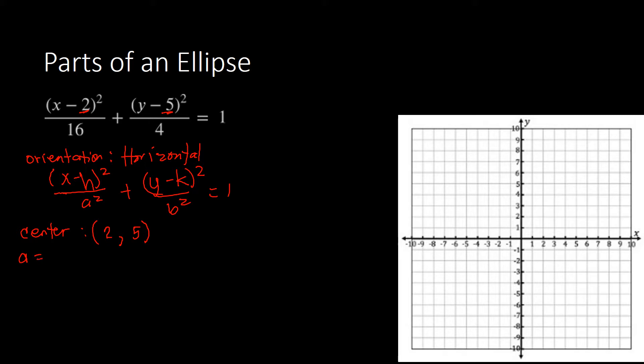Our a is: since we've got a squared equal to 16, getting the square root of 16, that is 4. So our a is 4. Our b is on (y minus 5): b squared is 4, so getting the square root of 4, our b is 2.